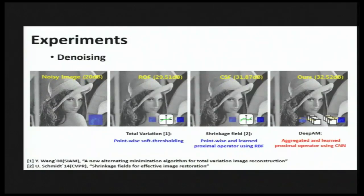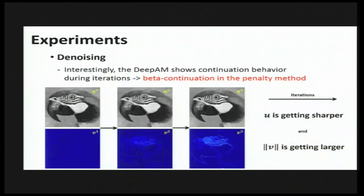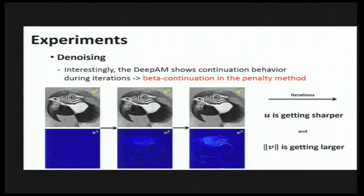This figure shows an example of single-image restoration. The proposed method outperforms existing methods based on pointwise proximal mapping. Very interestingly, our neural network shows continuation behavior: the auxiliary variable u becomes sharper and the magnitude of V grows larger as the iteration proceeds. We conclude that better continuation heuristics in the classical penalty method are crucial for high-quality image restoration.